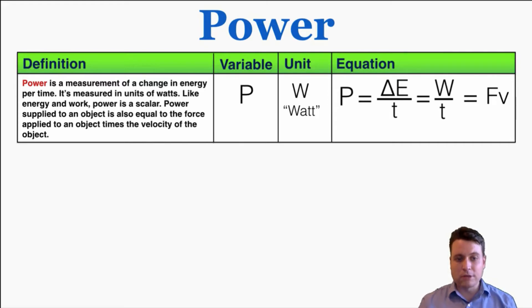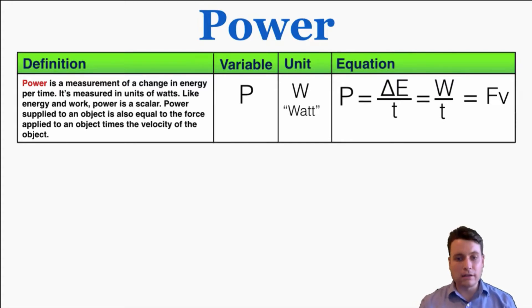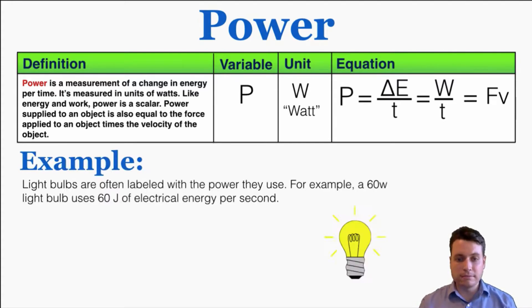Power supplied to an object is also equal to the force applied to an object times the velocity of an object. The force times velocity definition of power isn't used quite as much as the energy per time definition, but it does come up every now and then, and in this video I'll show you why it looks the way that it does.